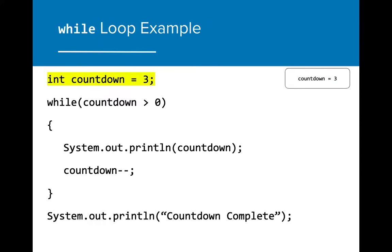Here we have created a simple countdown program using a while loop. We've created a variable called countdown and set the boolean expression to be countdown greater than zero, indicating that if countdown is greater than zero, the while loop will execute. It's incredibly important that the countdown variable is initialized before the start of the while loop because the while loop relies on the countdown variable to decrease every time through the loop. Without this, our while loop would run infinitely. For now, let's hit run.